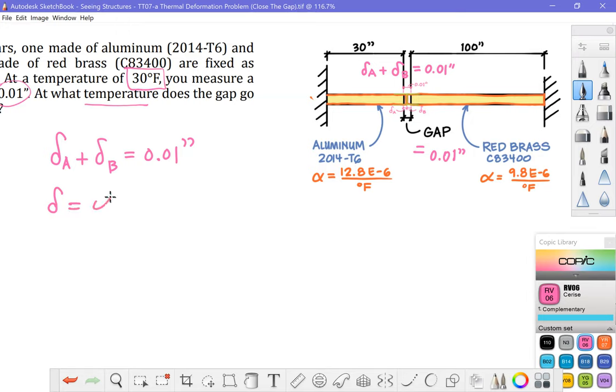and we remember that thermal deformation is defined as the product of three things. Alpha is going to tell us what material, ΔT will tell us the change in temperature, and L will be the original length. I'm going to stick with using subscripts of A for aluminum, subscripts of B for brass.